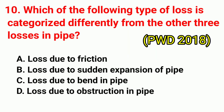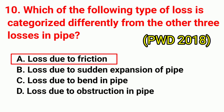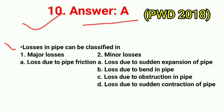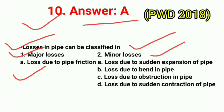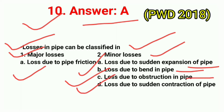Question No. 10. Which of the following types of loss is categorized differently from the other 3 losses in a pipe? Correct answer is option A: loss due to friction. There are 2 types of head losses in pipe flow: major head loss and minor head loss. Major loss is due to pipe friction. Minor losses include: loss due to sudden expansion, loss due to bend in pipe, loss due to obstruction in pipe, and loss due to sudden contraction of pipe.